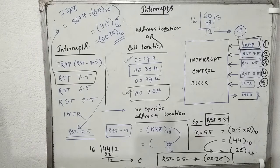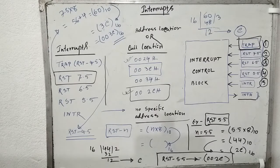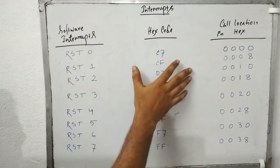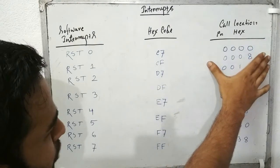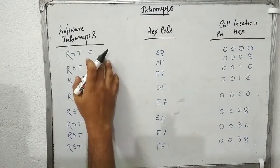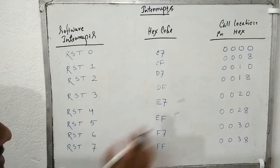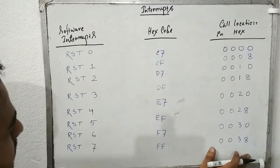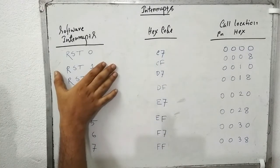Now I am going to write the 8 software interrupts with their hex codes and specific vector locations. I will write the whole chart for you. The software interrupts run from RST 0 to RST 7, and they each have different address locations in memory. We can calculate the particular location for each software interrupt using the same method.